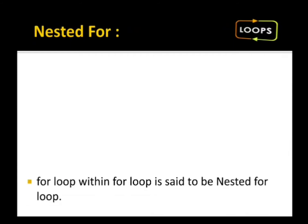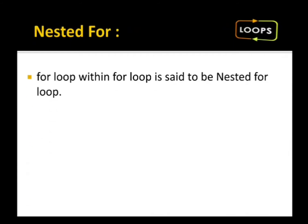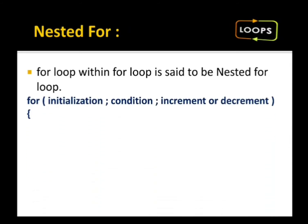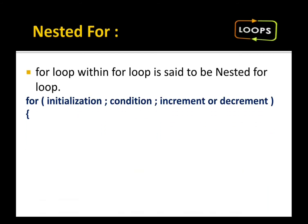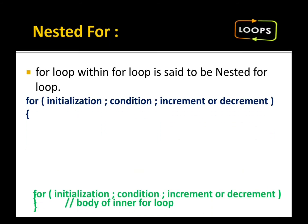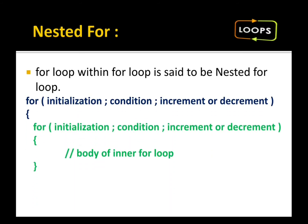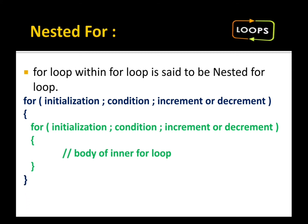Nested for means a for loop within a for loop — that is called a nested for loop. When we have one outer for loop, and inside that outer for loop we have an inner for loop, then it is said to be a nested for loop.